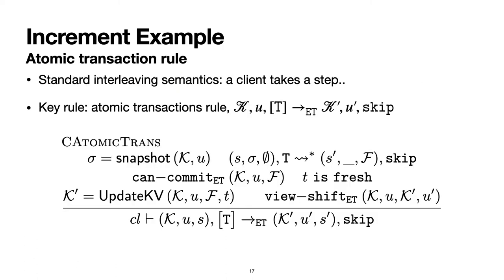Note that all the steps just described form one big rule in our semantics called the atomic transaction rule. Other rules such as sequential composition are as expected.